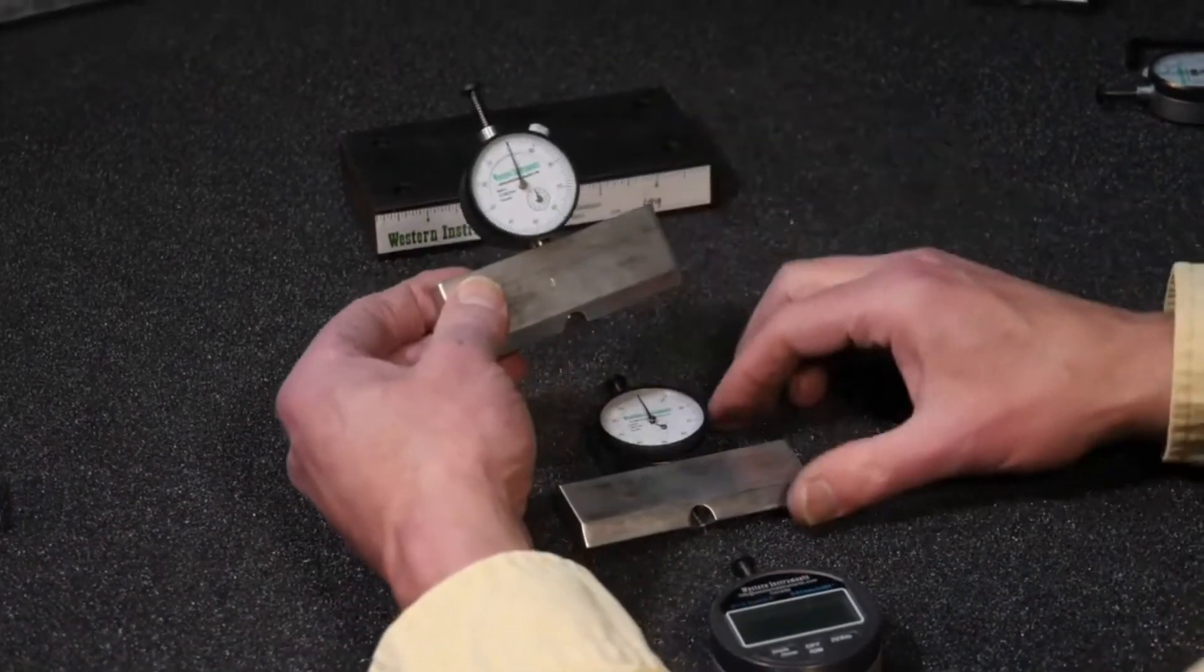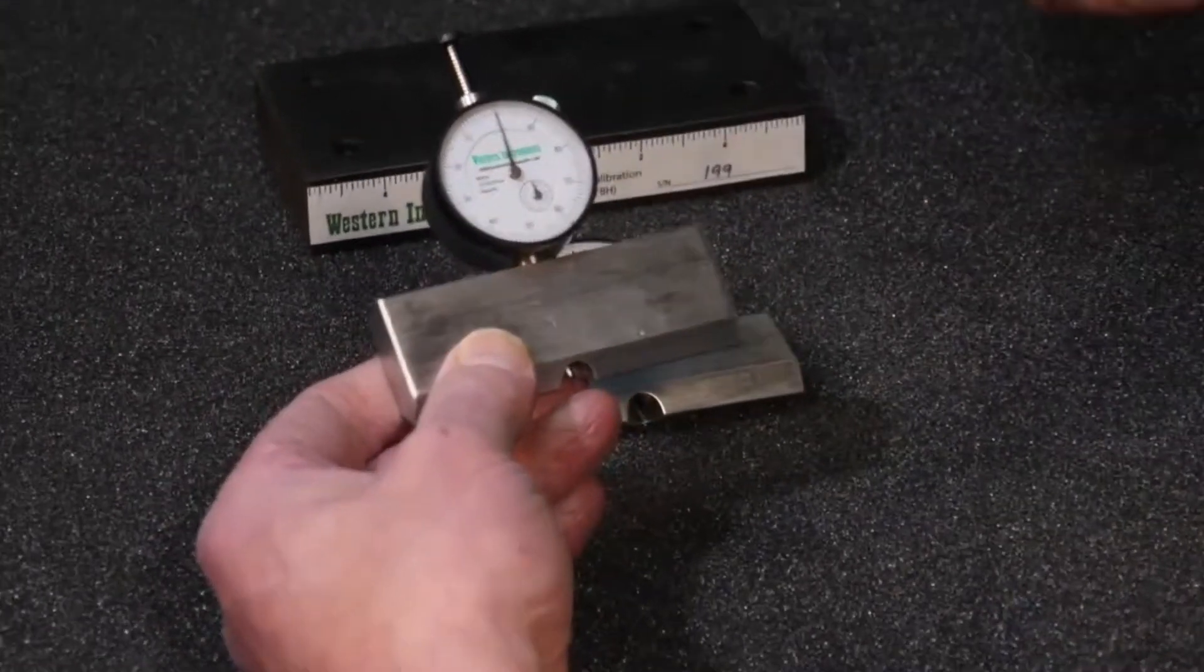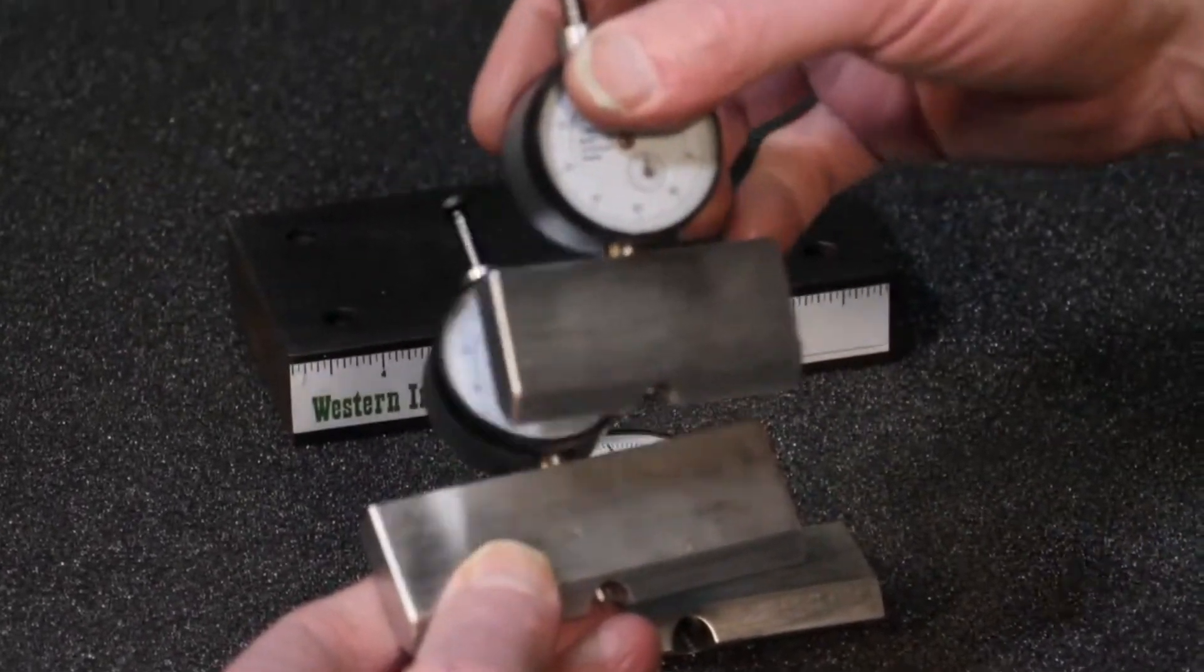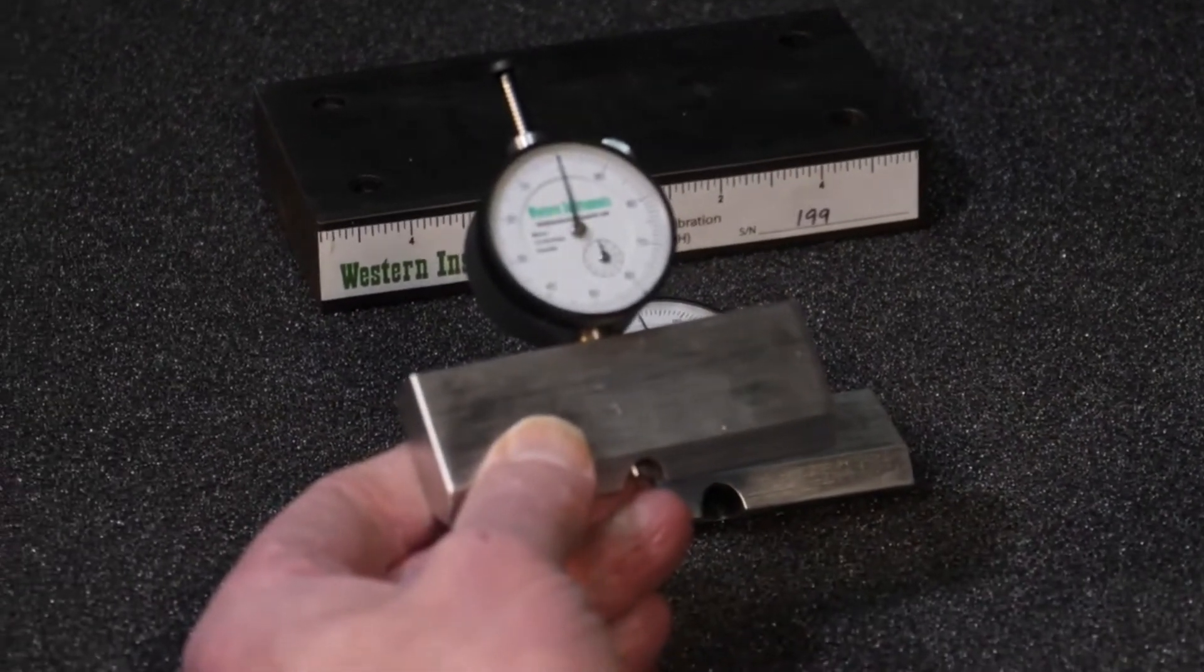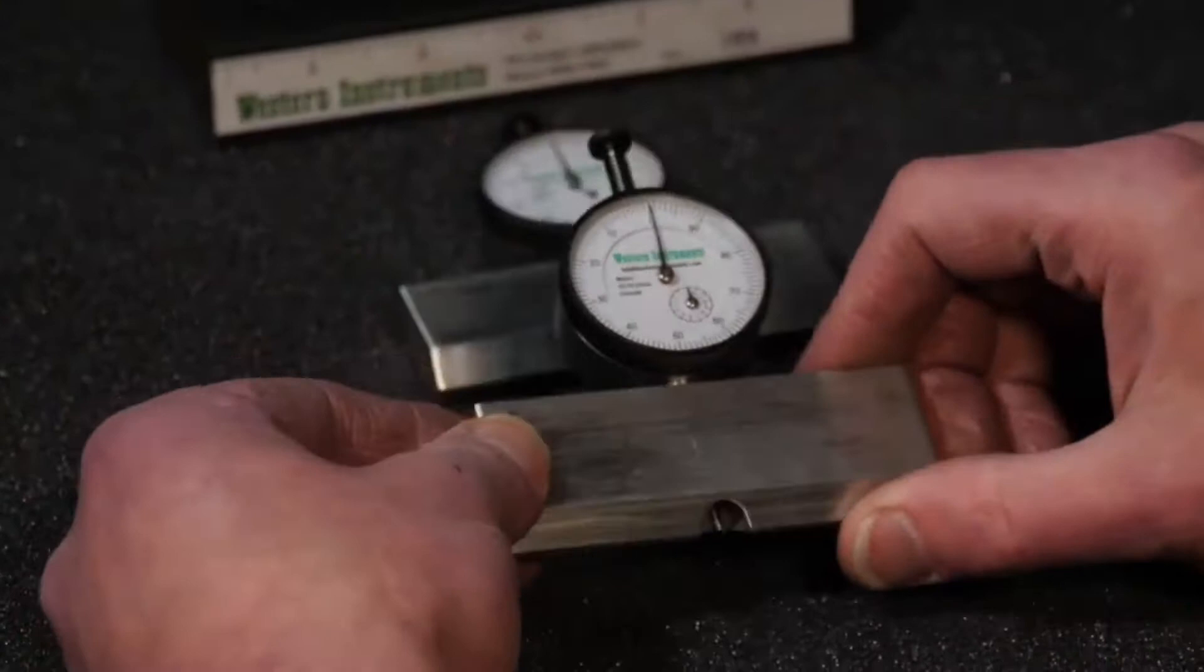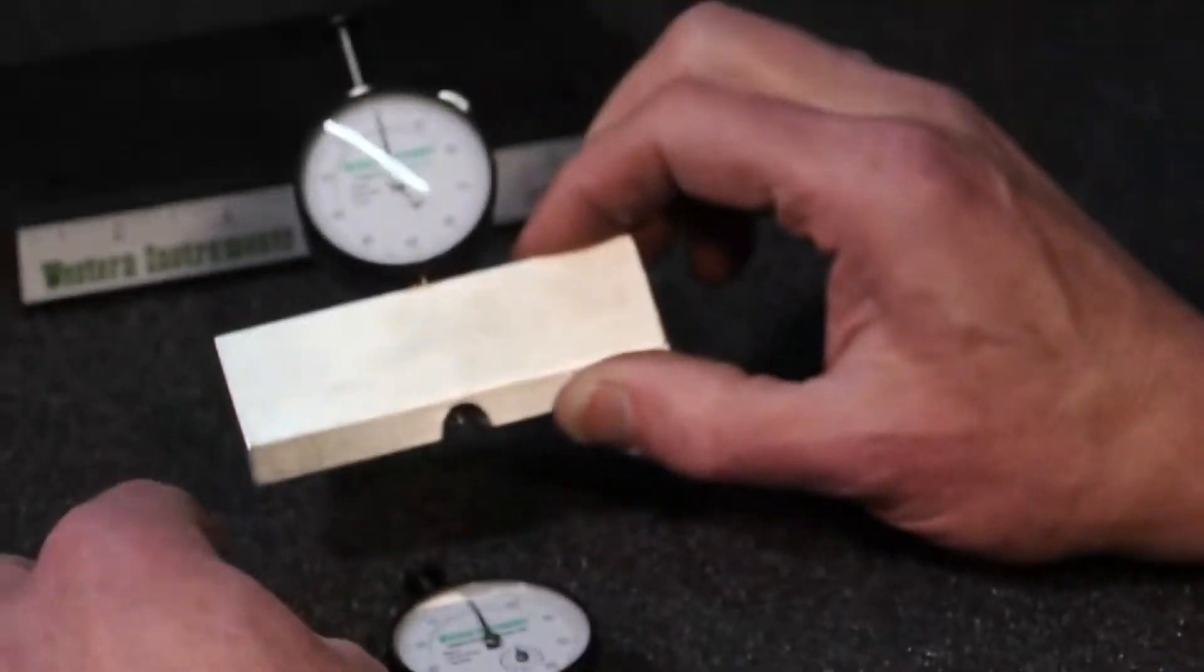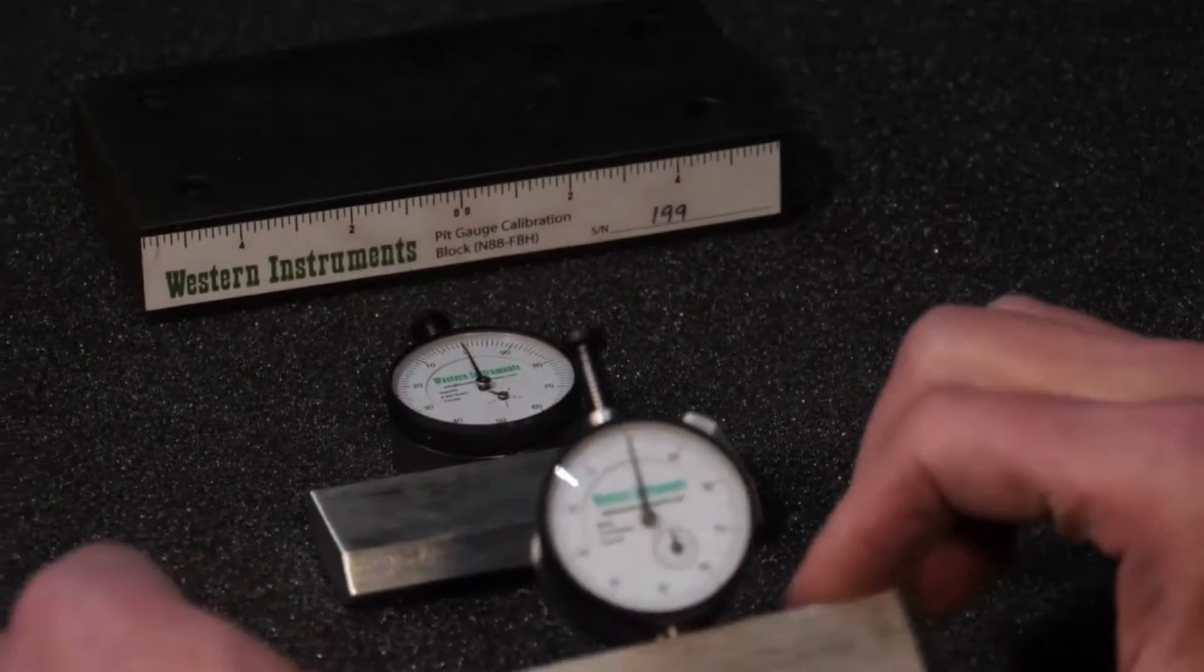This is our basic plus pit gauge. It's similar to our basic, only with a longer blade. We don't understand why, but it again has very limited use. The basic plus is available in imperial and metric.